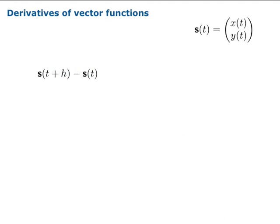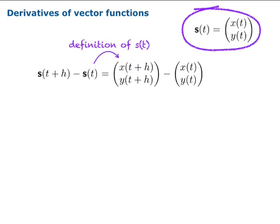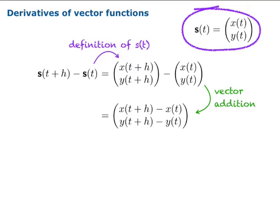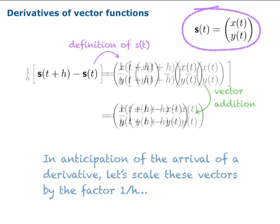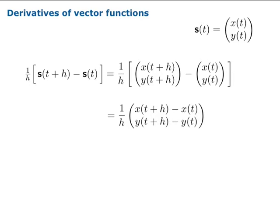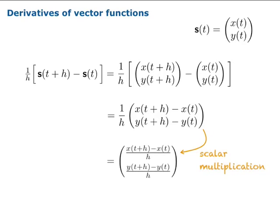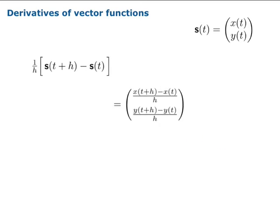Let's look at this difference algebraically. We're going to apply this definition of s and simply plug in the functions x and y in components. Then we'll apply a vector subtraction to get one single column vector. In anticipation of the arrival of some sort of derivative, let's scale this vector by a factor of 1 over h. All we've done here is multiplied all the vector quantities by 1/h, scalar multiplication.